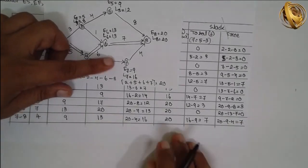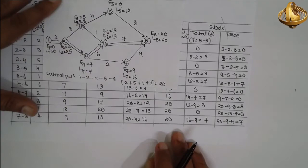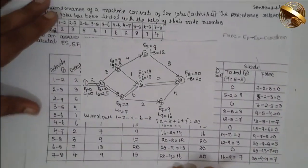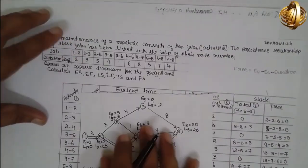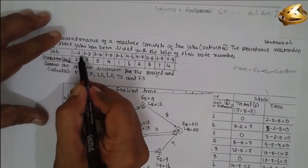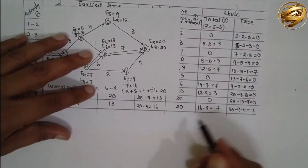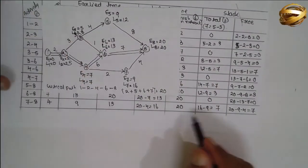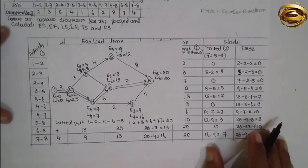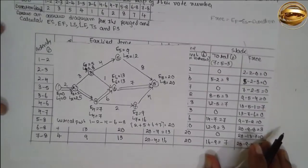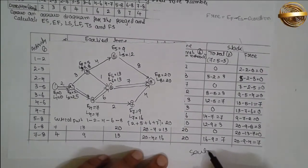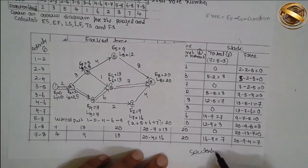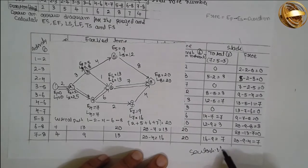In this way you solve the Critical Path Method problem when activities are given in terms of node numbers. I am Santosh Gayadankar. Thank you very much.